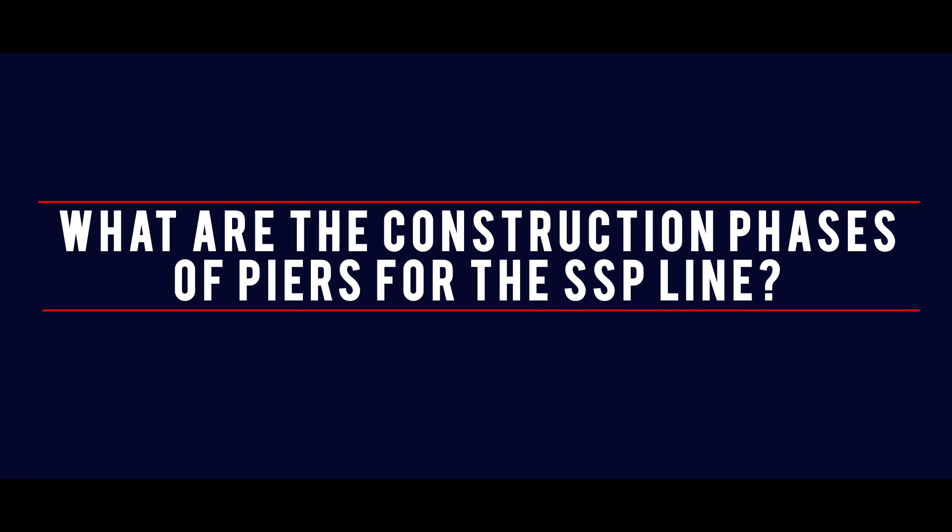What are the construction phases of PAs for the SSP line? The construction of the PAs typically commences from the foundation, which consists of piles with pile caps, followed by the pier column, and ends with the pier head.